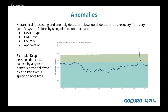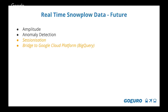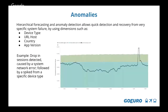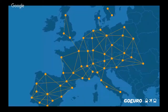For the real-time streaming data from Snowplow, we want to build our sessionization system from the current batch system toward a real-time streaming system. We're also building a bridge to Google Cloud Platform because a lot of our systems are based on BigQuery and our analysts are comfortable using BigQuery, so we want to move from an AWS workspace to Google Cloud Platform.